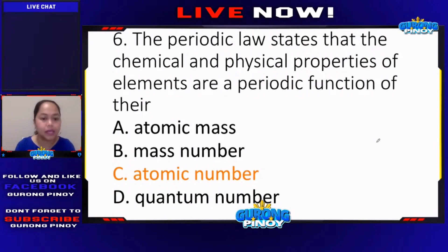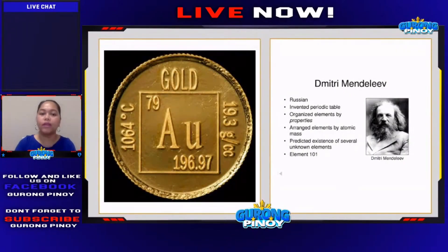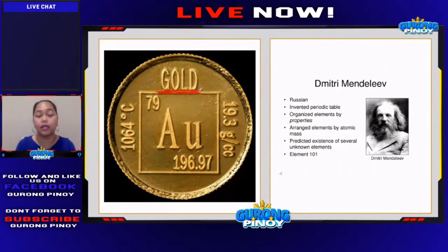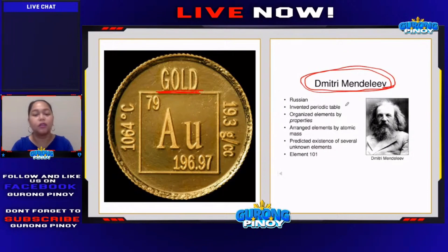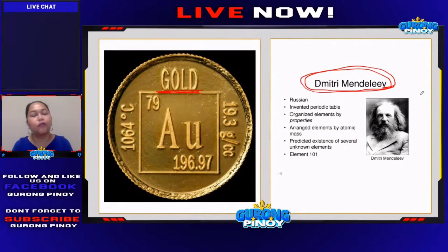Now, what is the difference between atomic mass, mass number, atomic number, and quantum number? Let me first discuss Dmitry Mendeleev. Dmitry Mendeleev was a Russian chemist, and he is known to be the father of your modern periodic table — he invented the periodic table. Take note of that.